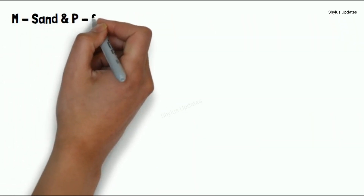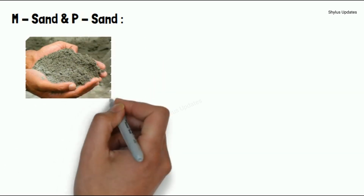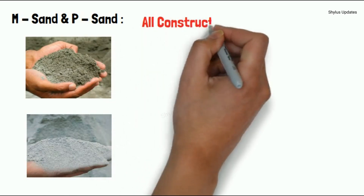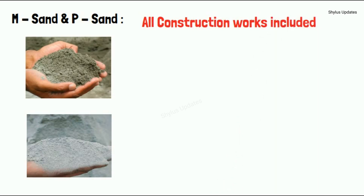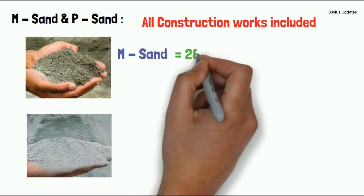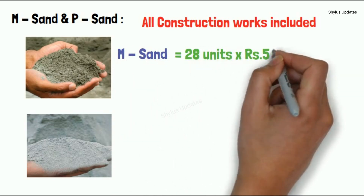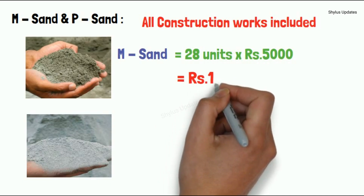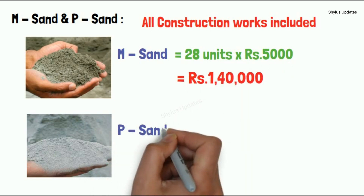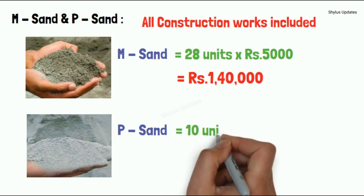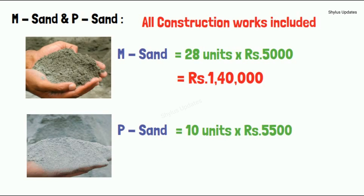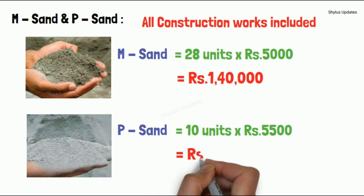M Sand and P Sand are used in all construction works. For a 1400 square feet house, 28 units of M Sand are required at Rs. 5,000 per unit, giving Rs. 1,40,000. For P Sand, 10 units are required at Rs. 5,500 per unit, giving Rs. 55,000.